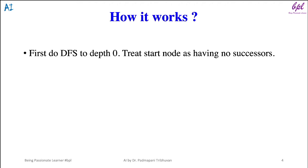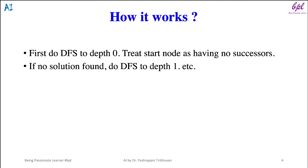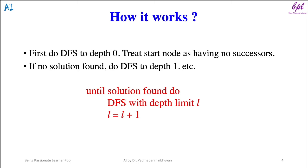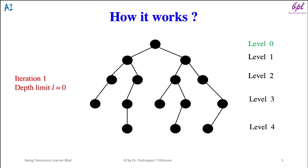Here is how it works: first, do DFS on depth level zero, treating the start node as having no successors. If no goal state is found, do DFS to depth level one, and so on. In short, until a solution is found, do DFS with depth limit L, then increase the value of L by one.